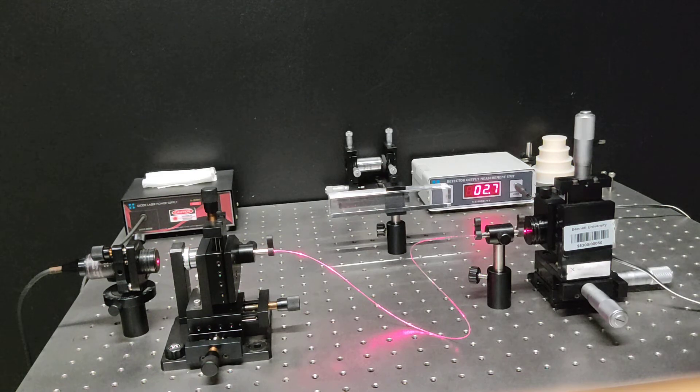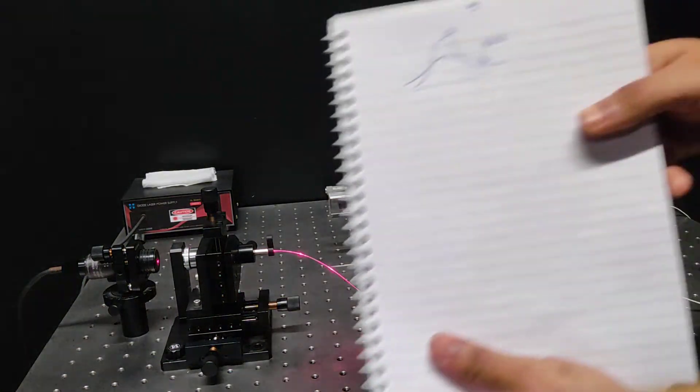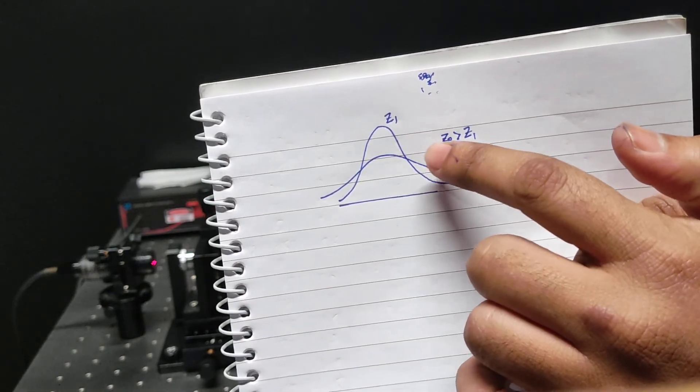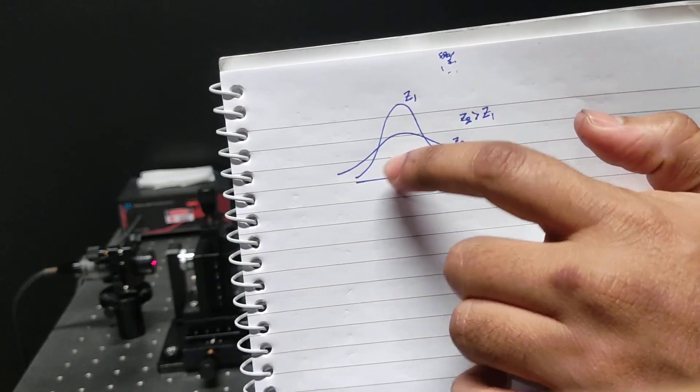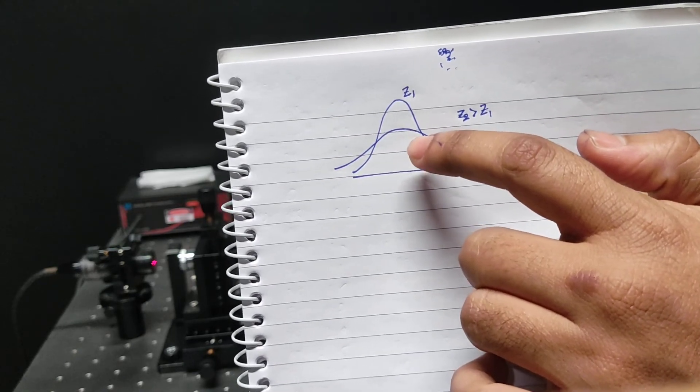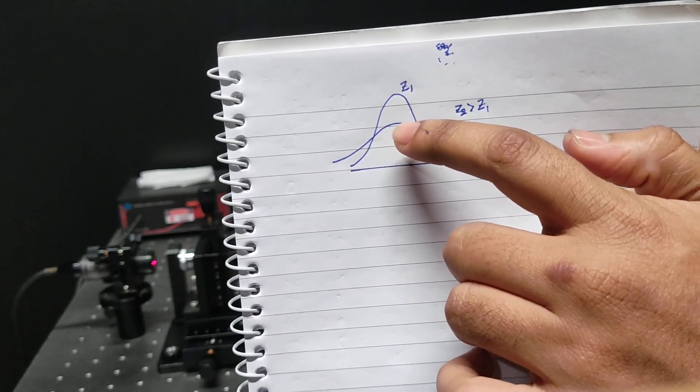More will be this flaring out and the peak power will reduce. I'll show you. So if you increase the z value, the peak power will reduce and the flaring out of this output power will be the same.